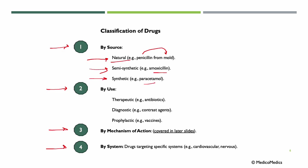Synthetic drugs, like paracetamol, are entirely manufactured through chemical synthesis with no direct natural source, designed to mimic or improve natural compounds. Classification by use includes therapeutic drugs like antibiotics, used to treat or manage diseases by alleviating symptoms or eradicating the underlying cause. Diagnostic agents, like contrast agents, aid in visualization of diseases during imaging such as X-rays or MRIs. Prophylactic agents like vaccines are administered to prevent diseases or infections before they occur, by enhancing immunity or reducing risk factors.